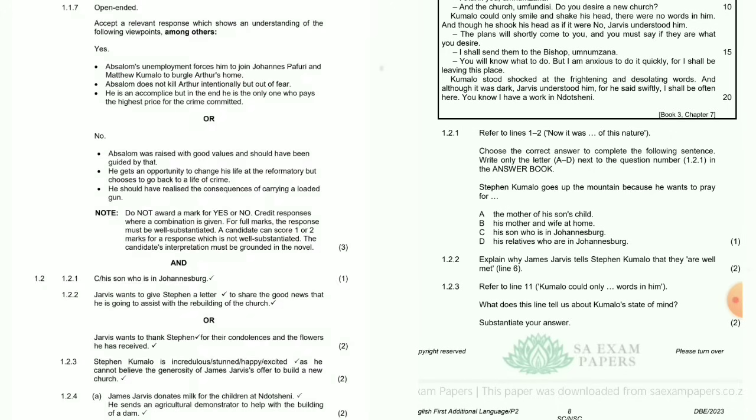Question 1.2.2: Explain why James Jovis tells Stephen Kumalo that 'they are well met' in line 6. Jovis wants to give Stephen a letter to share the good news that he is going to assist with the rebuilding of the church.